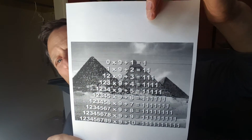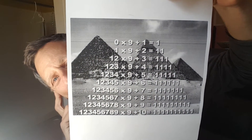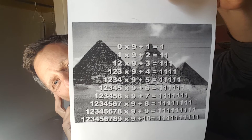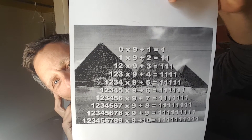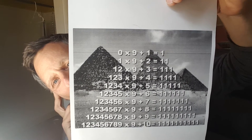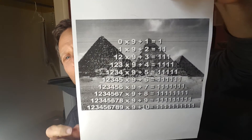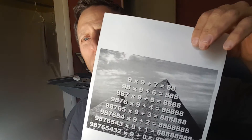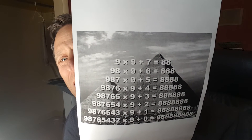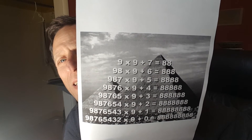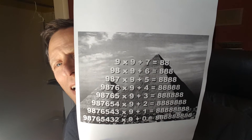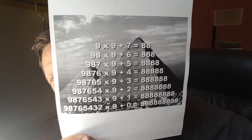Even in large number multiplication and addition, you get some amazing magic. 0 times 9 plus 1 is 1. 1 times 9 plus 2 is 11. 12 times 9 plus 3 is 111. 123 times 9 plus 4 is 1111 — and it goes on and on, to infinity. Going backwards: 9 times 9 plus 7 is 888. 98 times 9 plus 6 is 888. 987 times 9 plus 5 is 8888. And that goes on forever, to infinity.